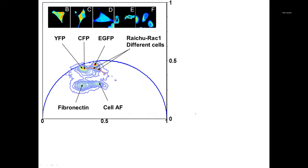In the original work with Michelle Digman and colleagues, we had YFP here, CFP here, and EGFP here in the phasor plot — different fluorescent proteins appearing at different positions. We also had the autofluorescence of the fiber and the autofluorescence of the cell. Although the scene can be very complicated, I can immediately distinguish one, two, three proteins, plus the fiber and autofluorescence, and see all the linear combinations between them — something you cannot do directly in the time domain.